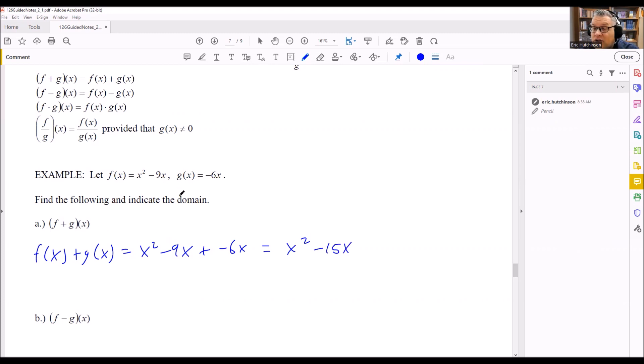Now it does ask us to find the domain of each of these as well. So for this, whenever we're looking for domain, the only two situations that we have to watch out for is that we can't divide by 0, and we can't take the square root of a negative number.